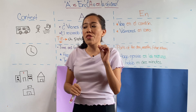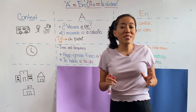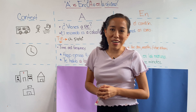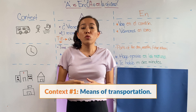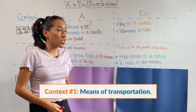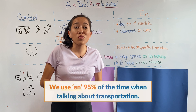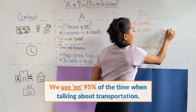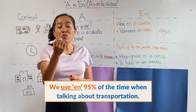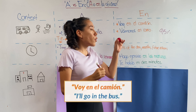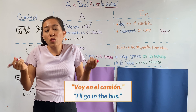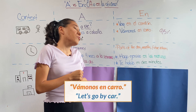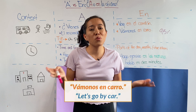So let's go with the first context: transportation. When we're talking about means of transportation, 95% of the time you are going to use en. That's pretty easy. For example, voy en el camión — I'm in the bus — or vámonos en carro — let's go by car, I don't want to walk.